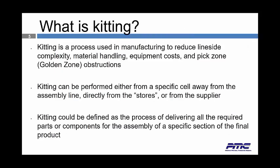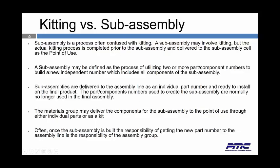There is a difference between kitting and subassembly — you often see it get mixed up. Subassembly is a process often confused with kitting. Subassembly may involve kitting, but the actual kitting process is completed prior to the subassembly and delivered to a subassembly cell. The subassembly cell then becomes the point of use rather than the line-side. A subassembly may be defined as a process of utilizing two or more parts or components to build a new and independent part number, which includes all the components of the subassembly.